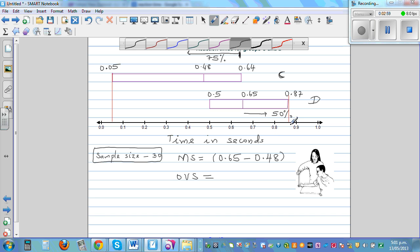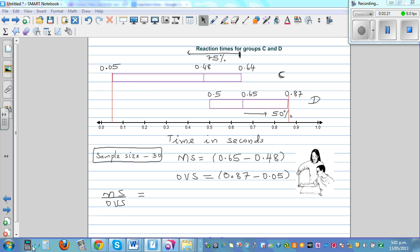That is 0.87 take away 0.05. So let's find how much is this as a percent of this. So median shift divided by overall visible spread. So let's do that on a calculator.